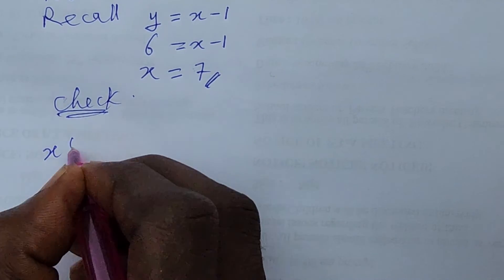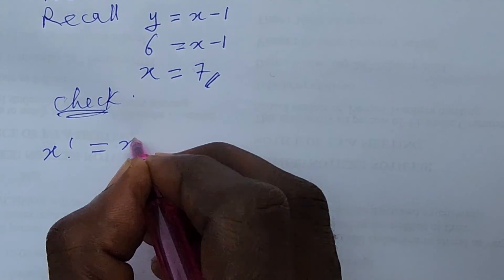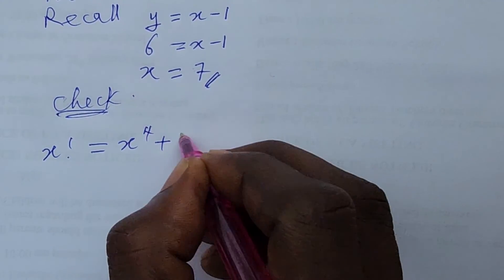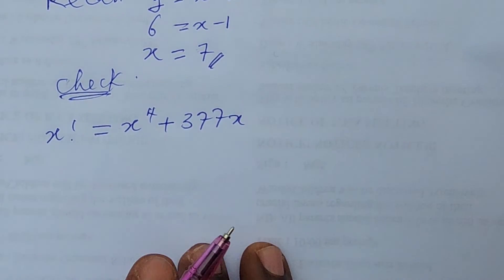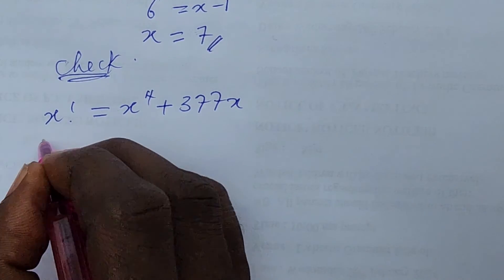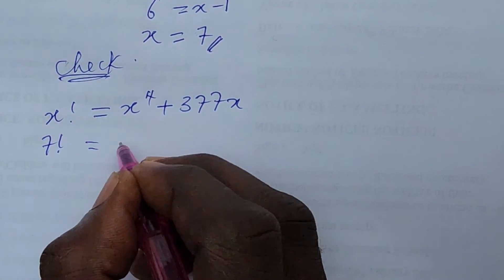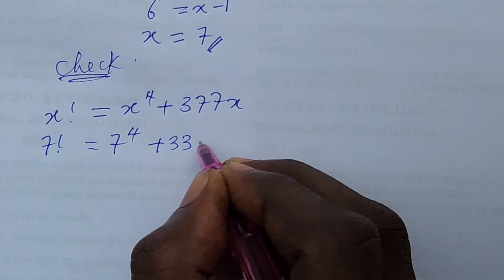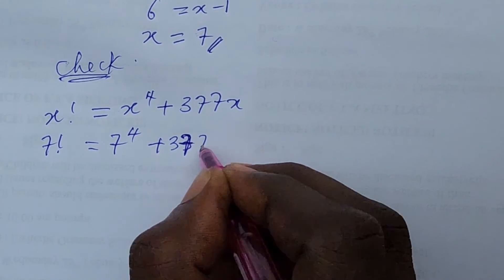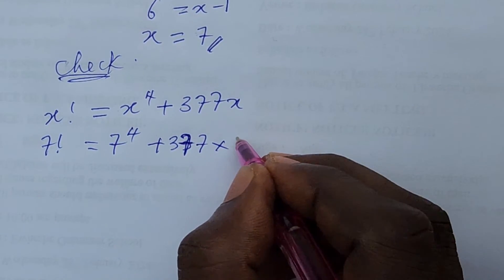So our expression we have your x factorial equal to x to the power of 4 plus 377 of x. Okay so we'll solve our x to be 7. So we're going to have this to be 7 factorial is equal to 7 to the power of 4 plus your 377 times your 7.